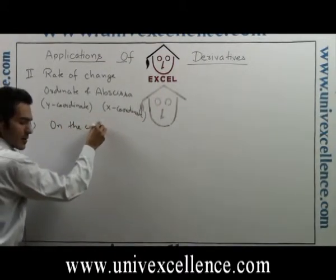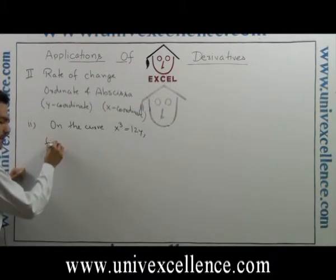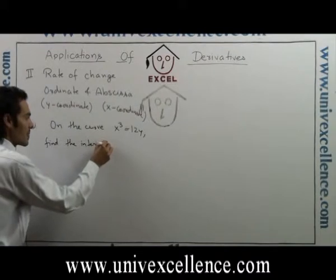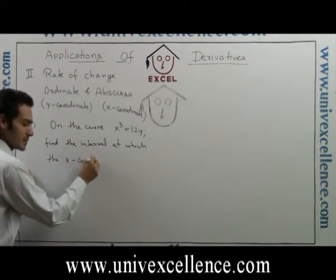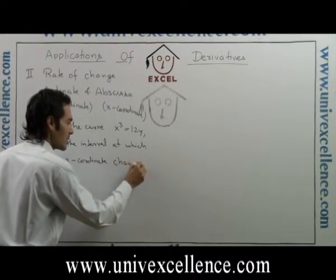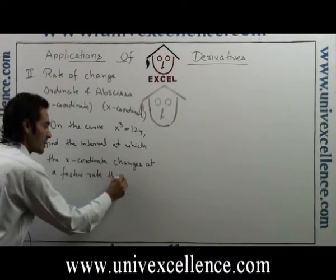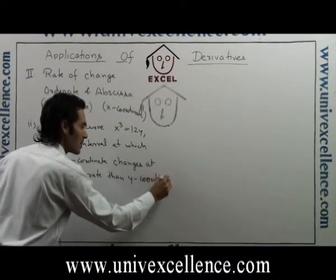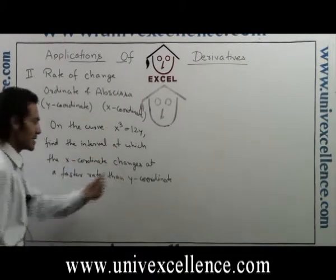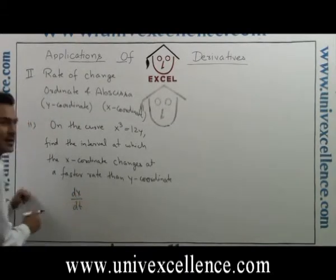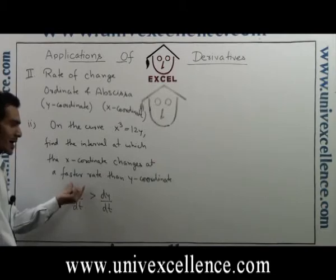Now considering the curve x³ = 12y. On this curve we have to find the interval at which the x-coordinate changes at a faster rate than the y-coordinate. The given curve is x³ = 12y, and we need to find the interval where dx/dt is greater than dy/dt, the rate of change of the y-coordinate.